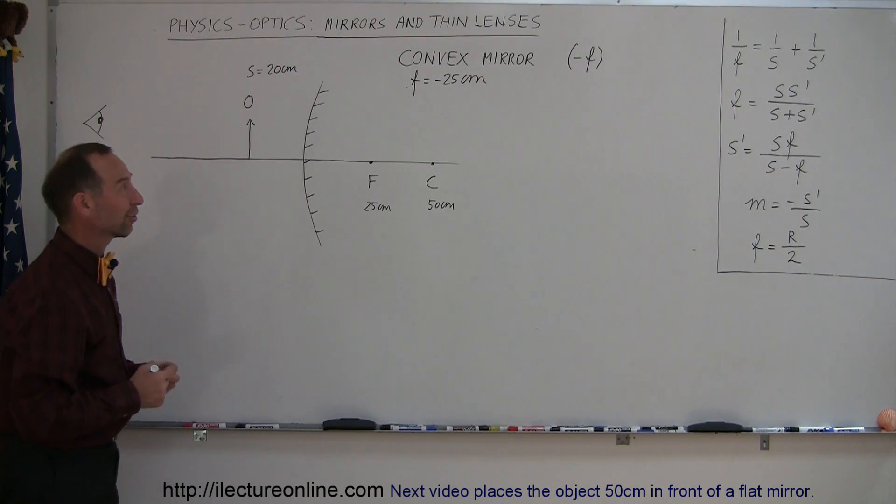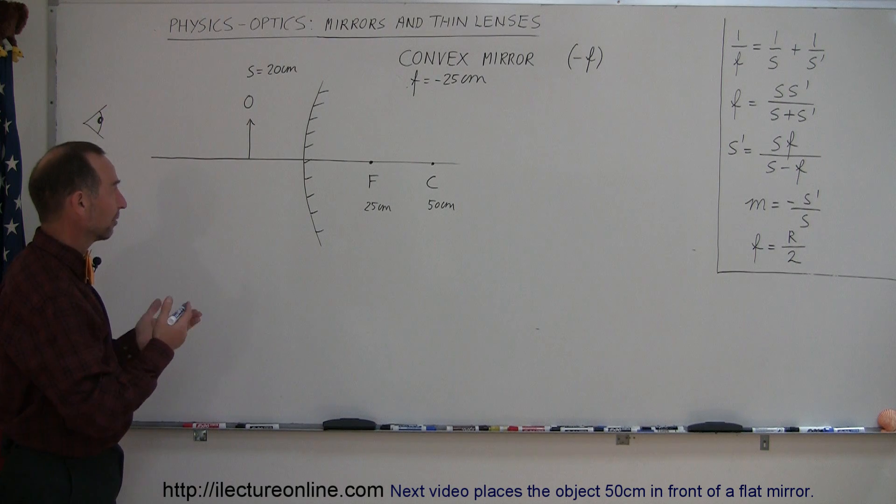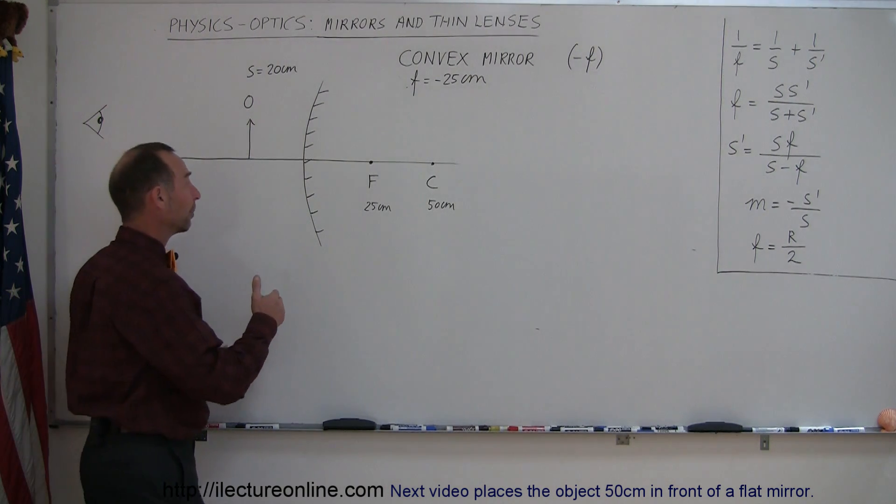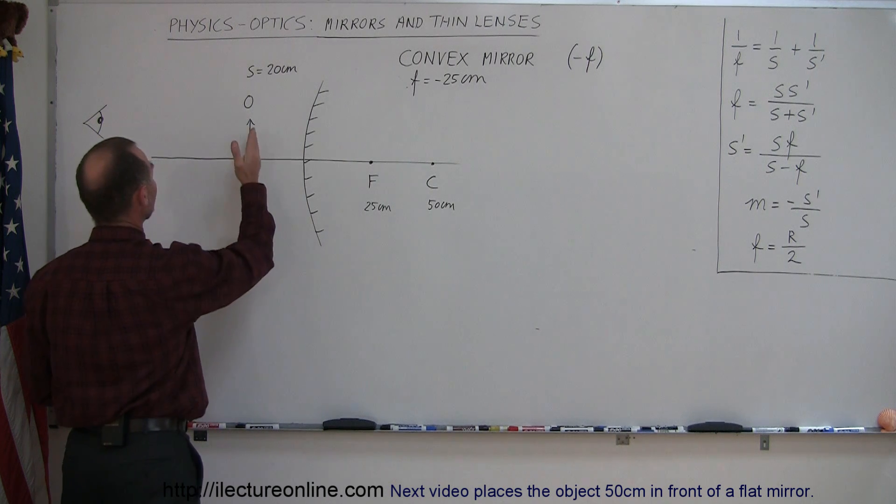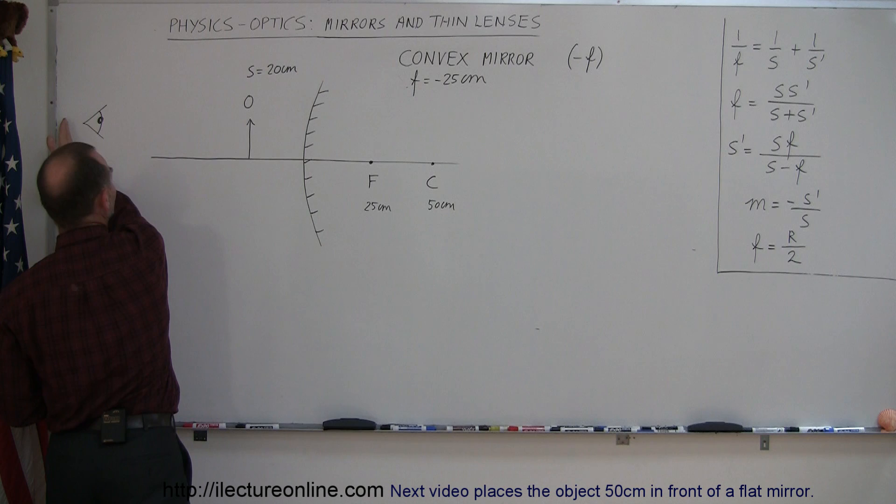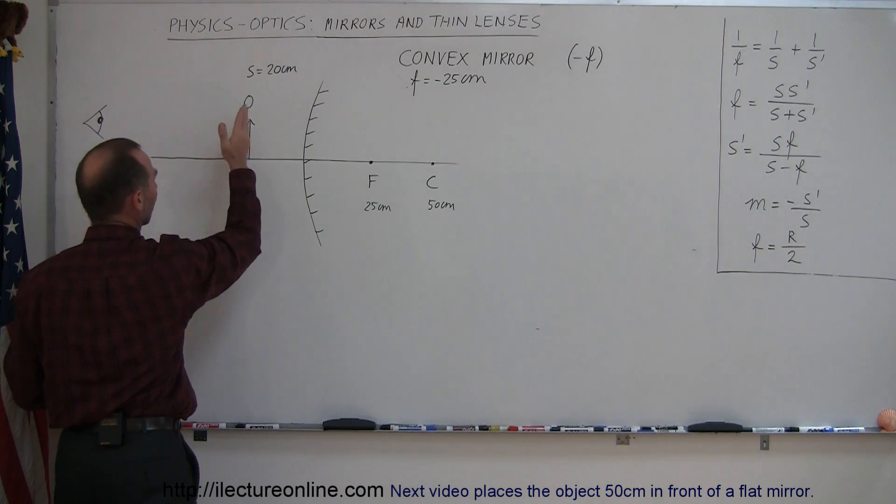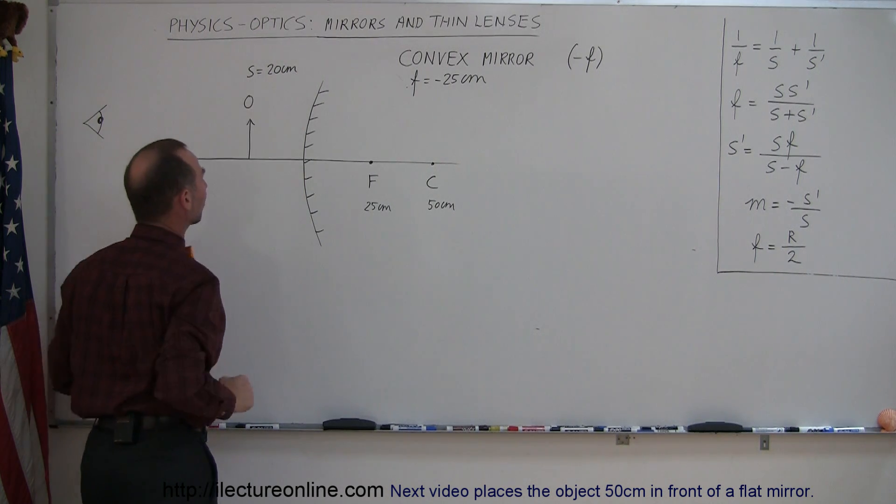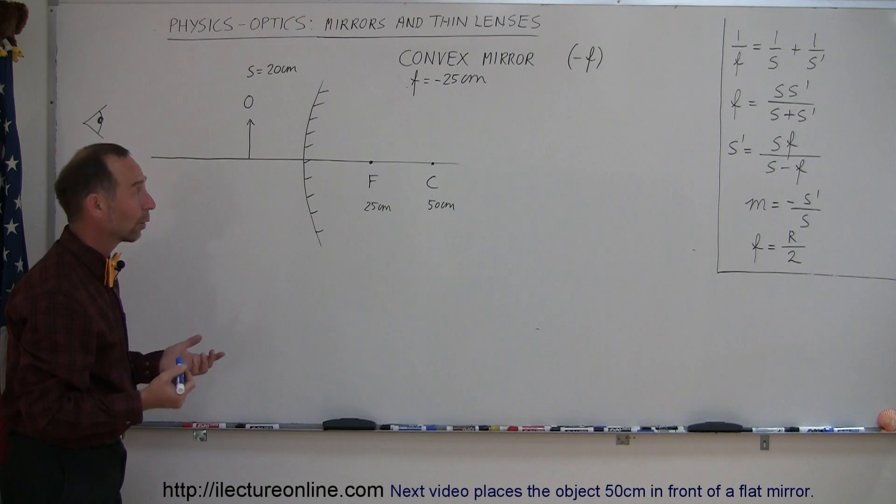Welcome to iLecture Online and here's our next example of how to find images when we have an object placed in front of a mirror. In this case we have a convex mirror just like the previous example and the only difference is that in the first case with the convex mirror we had the object far away from the mirror. Now we place the object a lot closer with an object distance of 20 centimeters, so where will the image appear?